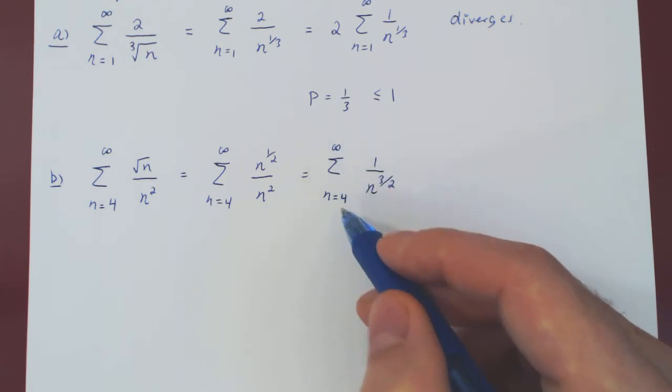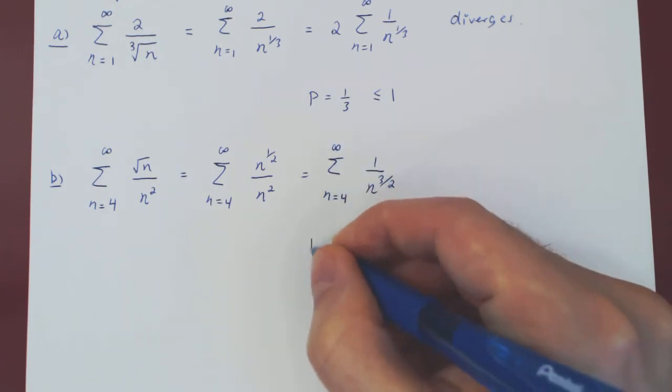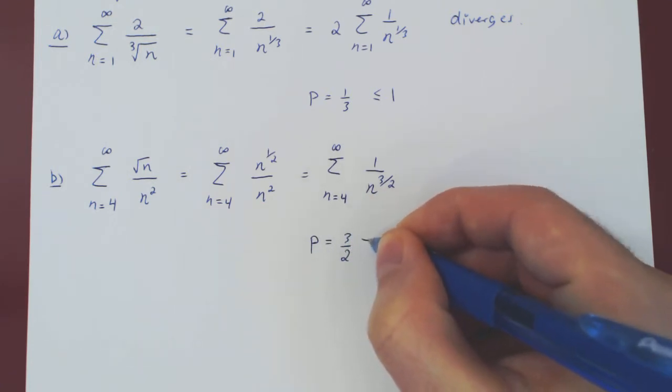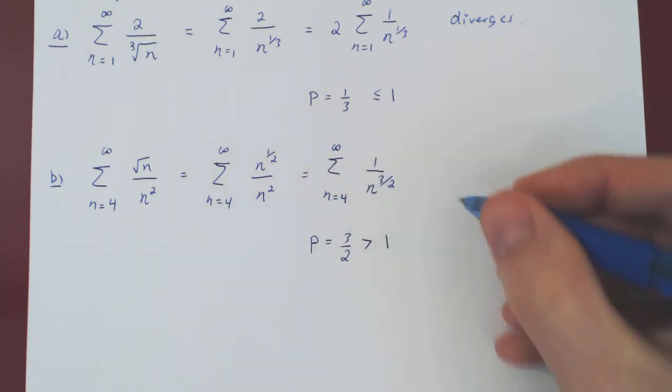And now we are summing from 4 to infinity, 1 over n to the 3 half. Clearly a p-series, p is now 3 over 2, which is strictly larger than 1. So this series converges.